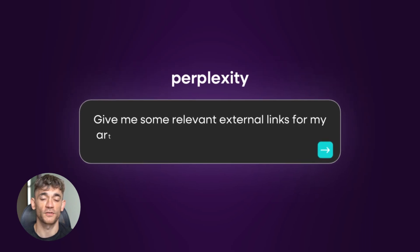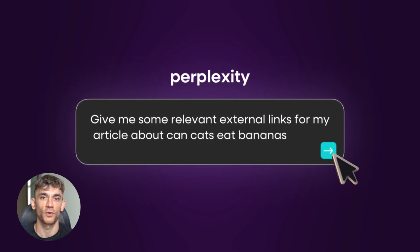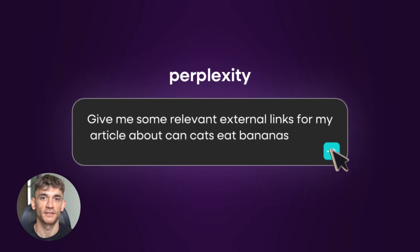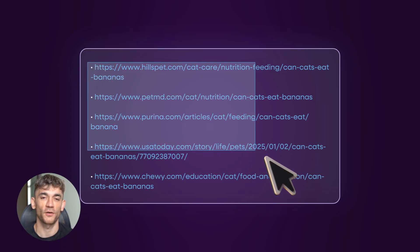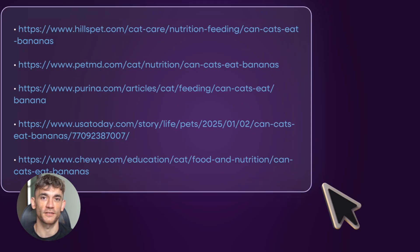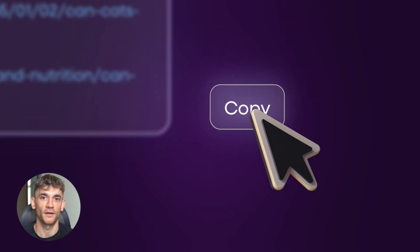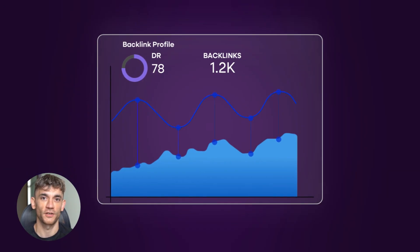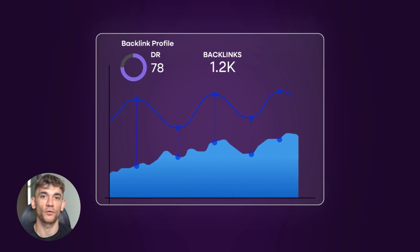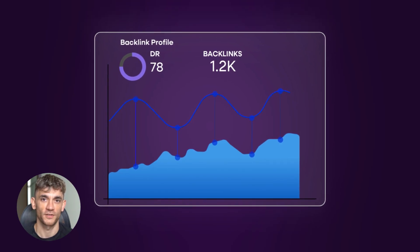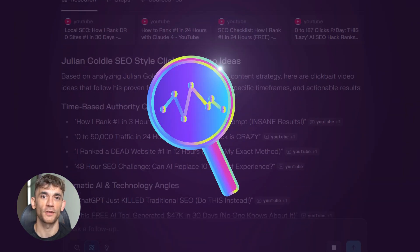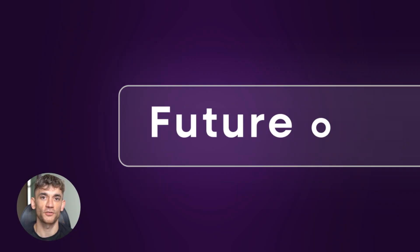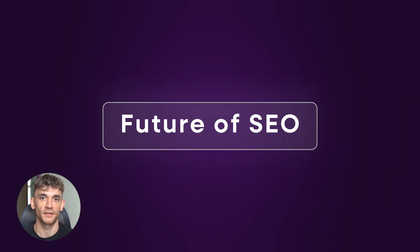Today I'm going to show you the newest ways to rank number one using Perplexity AI and the brand new Claude 4. These tools just got massive updates that nobody's talking about. I'll reveal the exact workflows I use to automate content research, find perfect external links, and create content that Google loves. This is the future of SEO, and it's completely free.